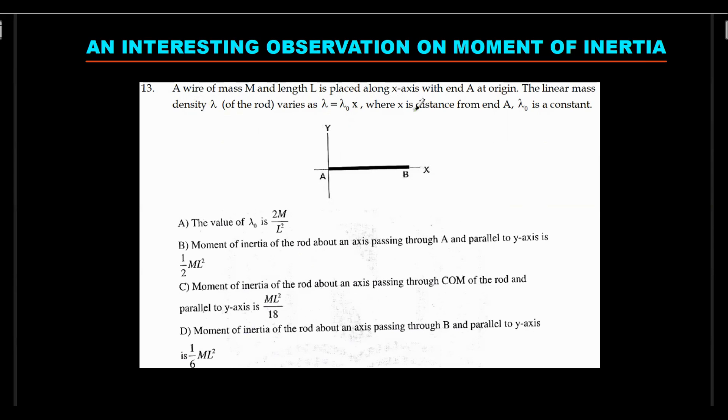Wire of mass M and length L is placed along x-axis with end A at origin. The linear mass density varies - it's non-uniform. At x equals zero the density is least, and as you keep moving towards L, density linearly increases. There are four options to give lambda naught value in terms of M and moment of inertia about some axes. One axis and center of mass which will be at 2L by 3 distance, moment of inertia calculation, and the third one. I hope you give it a try.